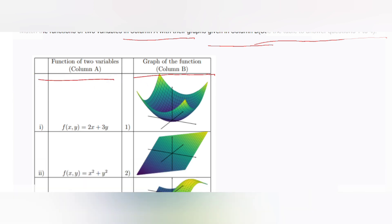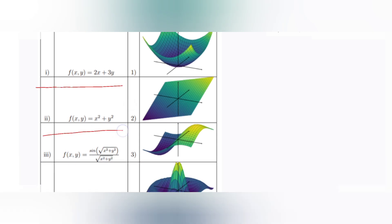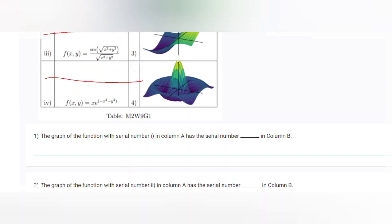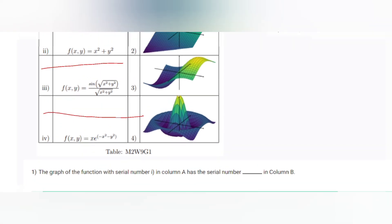The four functions in column A are: first, f(x,y) = 2x + 3y; second, f(x,y) = x² + y²; third, f(x,y) = sin(√(x²+y²)) / √(x²+y²); and fourth, f(x,y) = x·e^(−x²−y²).